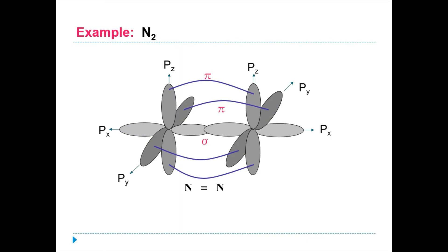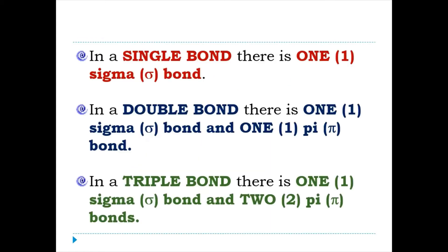Another example of a triple bond is the nitrogen gas. You can see that the Px, Py, Pz is all overlaps between the two nitrogen atoms. As a conclusion, we can see that a single bond would have one sigma bond. A double bond would have one sigma and one pi, whereas a triple bond like we have drawn just now has only one sigma bond but two pi bonds.